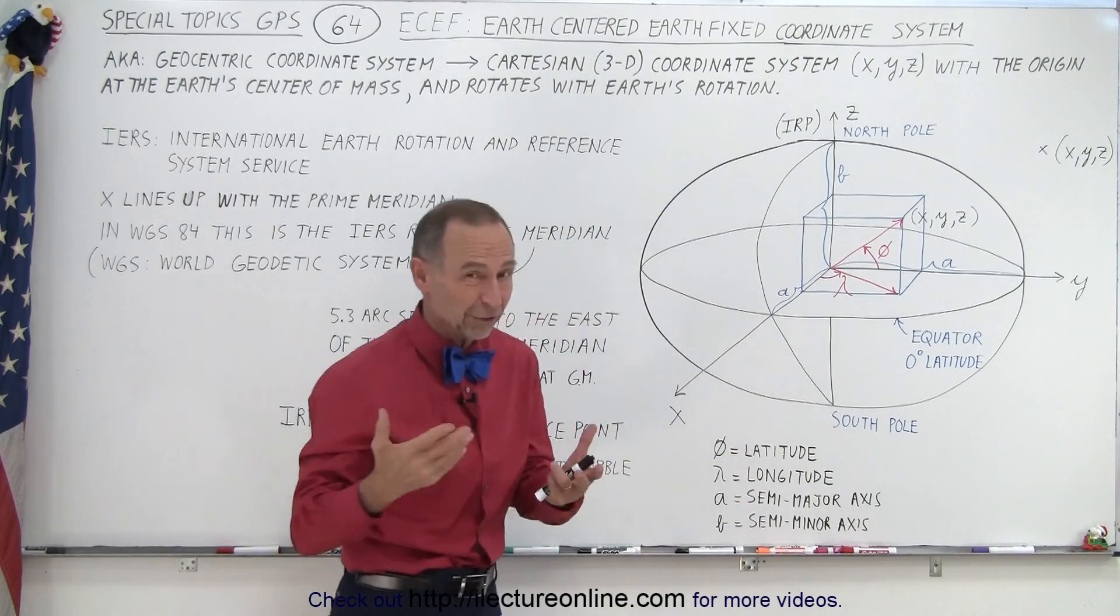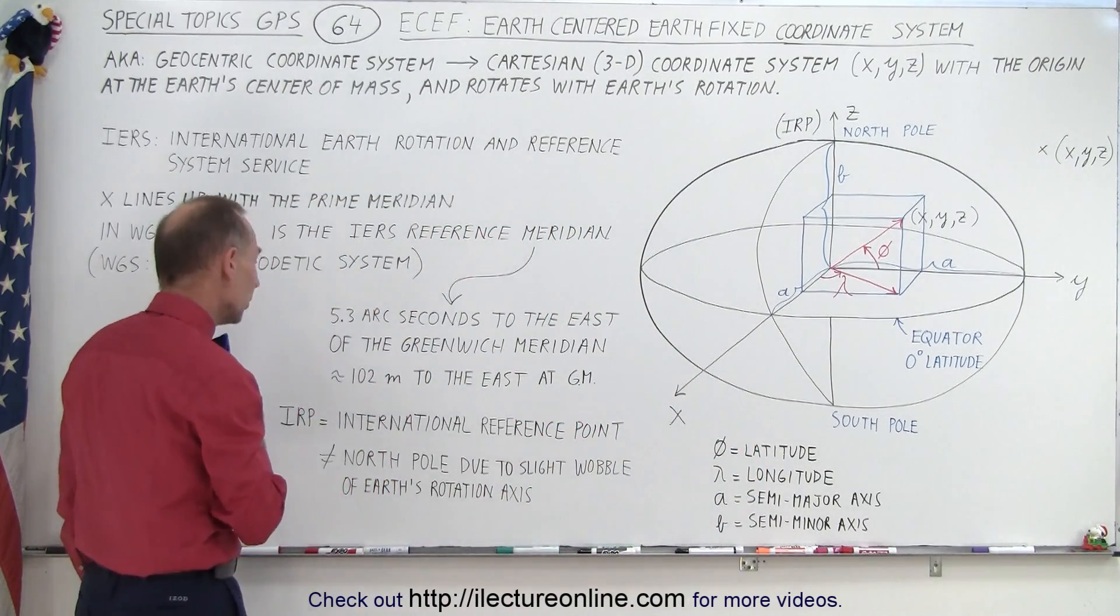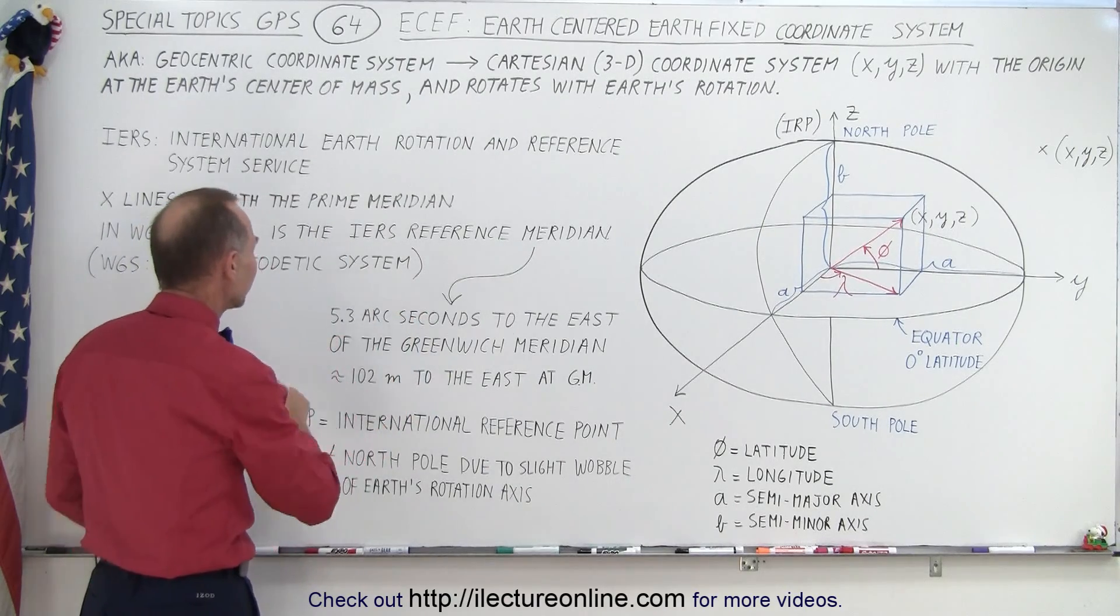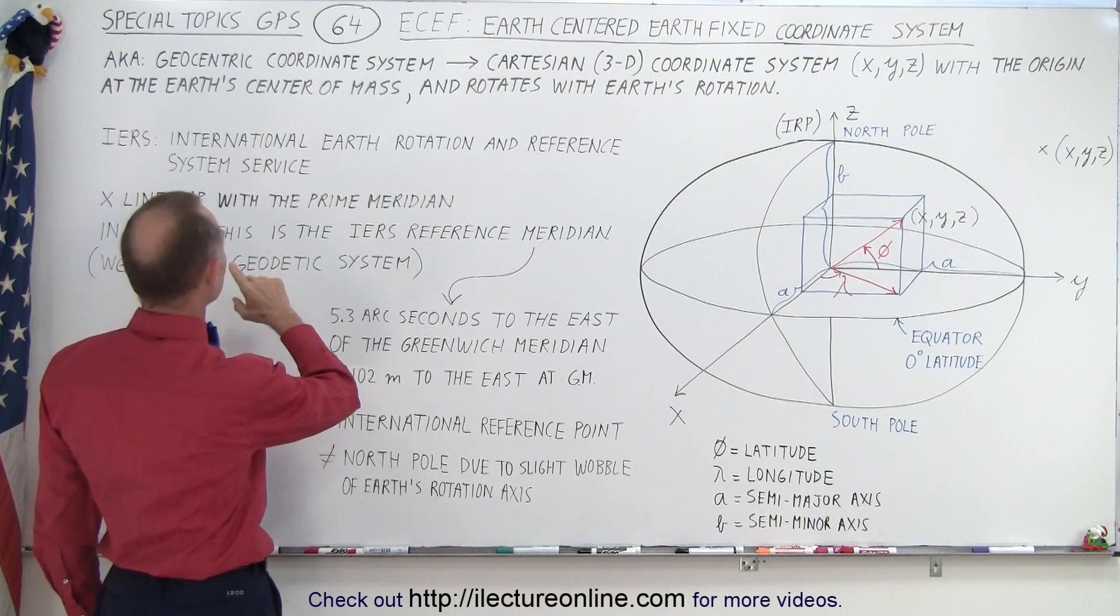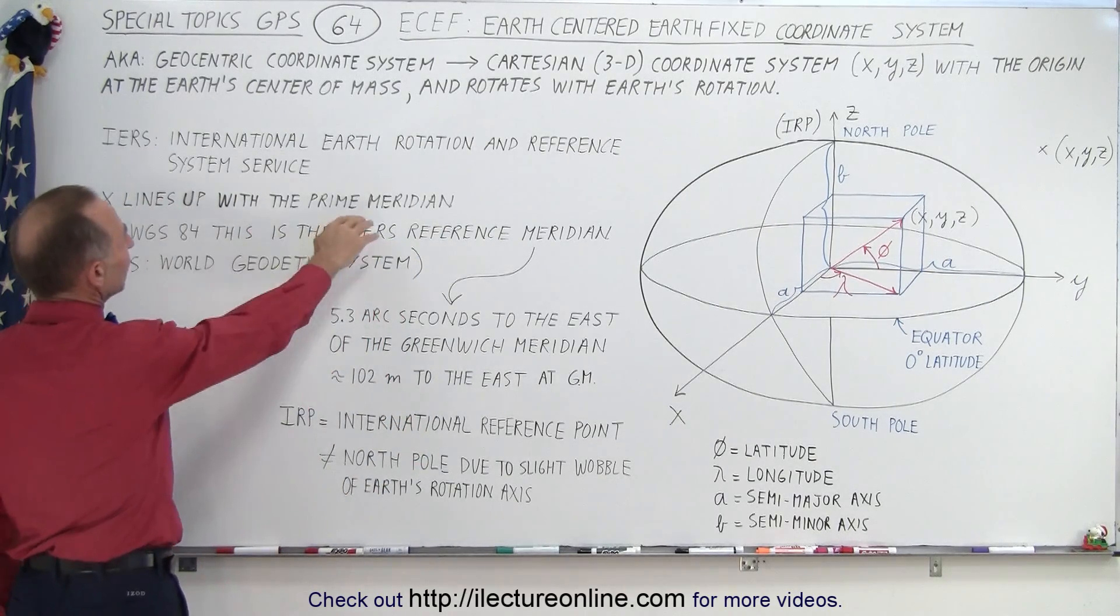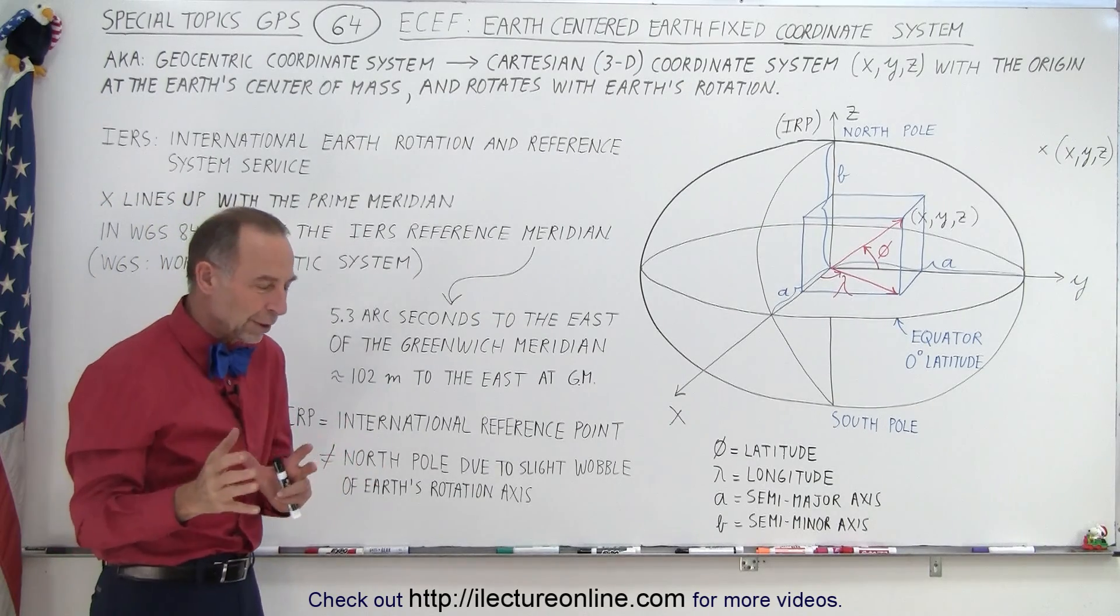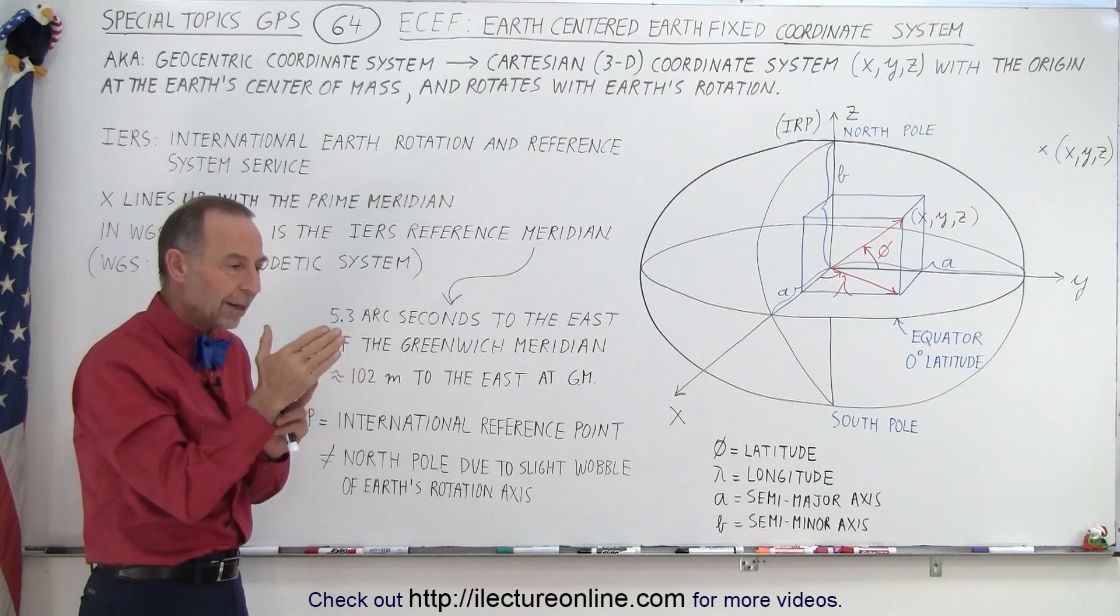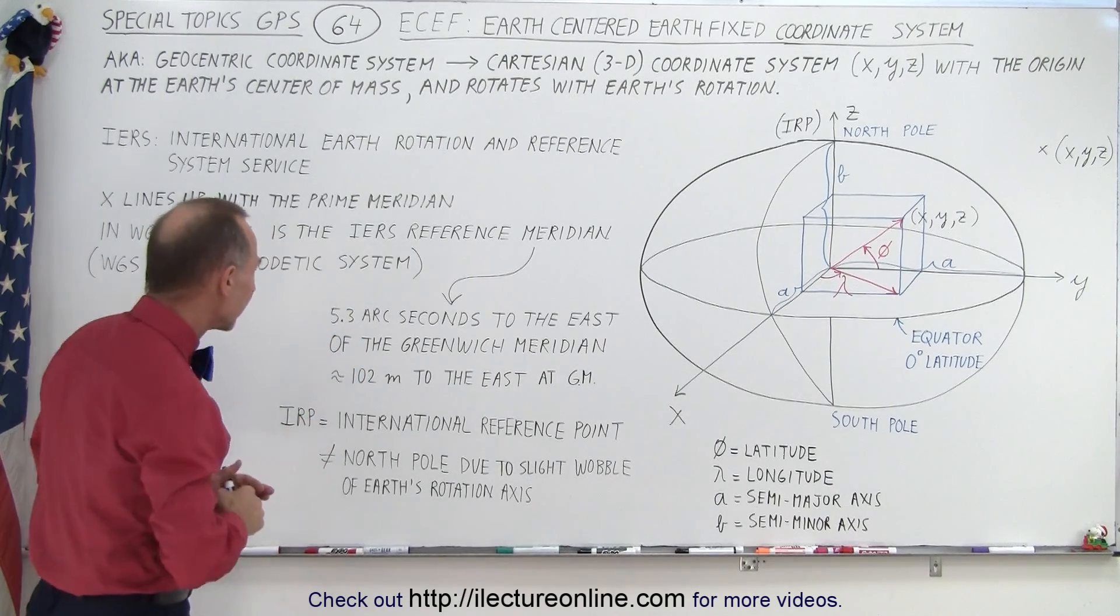Now of course where is the X axis pointed to? Well, the X axis is pointed to what we call, let's see, where are we, right here, it's the prime meridian. So where, there we go, I was trying to find where the text was. So it lines up with the prime meridian. Now what is the prime meridian? Well in the old days it used to be the Greenwich meridian at zero degrees, but it's not quite located there anymore.